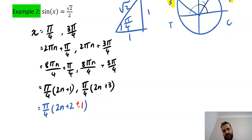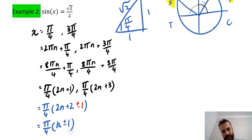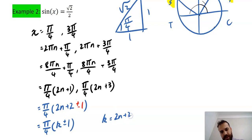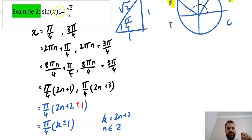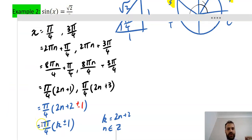To neaten things up, we rewrite this as π/4 times (k ± 1), where k equals 2n + 2 and n is an integer. So the general solution to sin x equals √2/2 is x equals π/4 times (k ± 1), where k equals 2n + 2 and n is an integer.